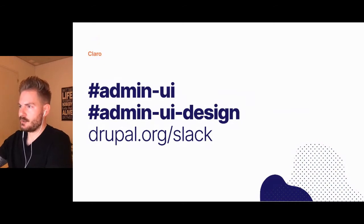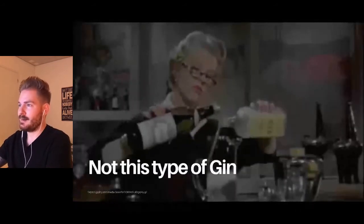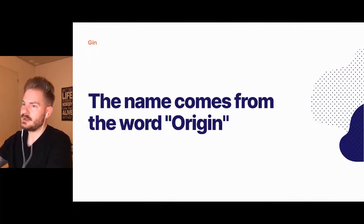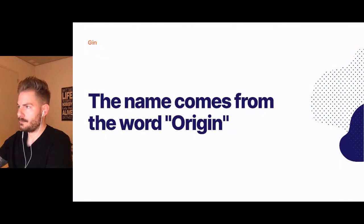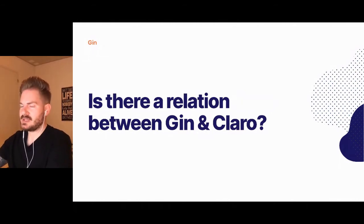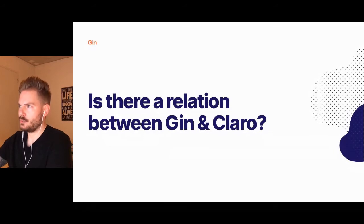Now, Gin. It's maybe not what you're thinking — it's not the drink. The name Gin basically comes from the word 'origin.' We shortened the name because a major game publisher owns the full name 'Origin.' The reason I chose this name was that it should serve as a source of inspiration and ideas for Claro as well. Is there a relation between Gin and Claro? Yes, there's a strong connection. Gin uses Claro as a base theme — it's kind of a sub-theme, but also a standalone theme.